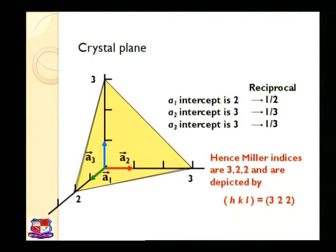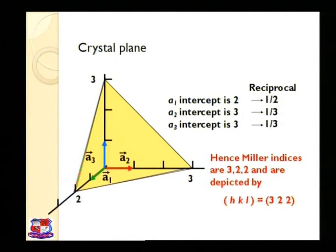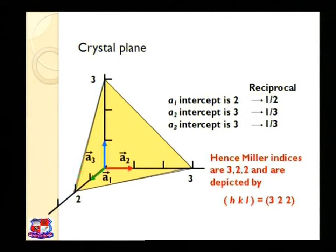Hence Miller indices are 3, 2, 2 and are depicted by hkl which is equal to 3, 2, 2. This slide represents the Miller indices 3, 2, 2. There are some steps through which we will take an example and calculate the Miller indices.